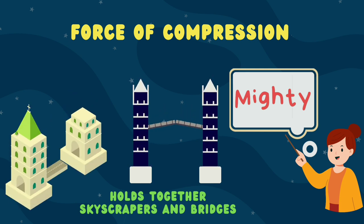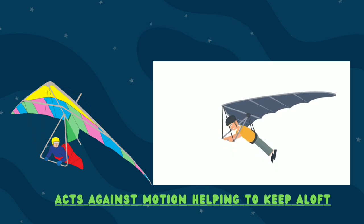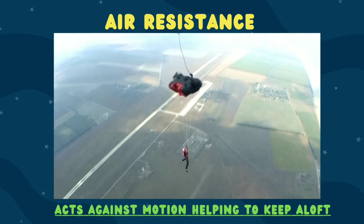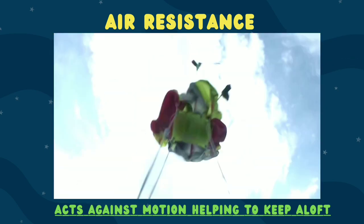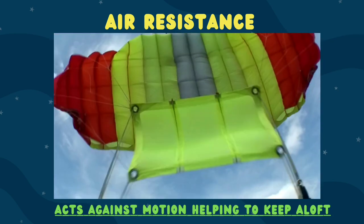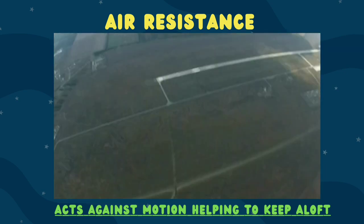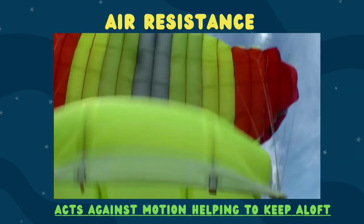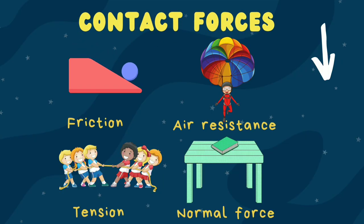Air resistance is a type of drag force that acts on objects as they move through the air. A paraglider is a great example of air resistance in action — a lightweight foot-launched glider designed to fly through the air by harnessing the power of air currents. When a paraglider is in flight, the air resistance acts against its motion, slowing it down and helping to keep it aloft. These are just a few of the many types of contact forces, the building blocks that make up the interactions of our physical world.